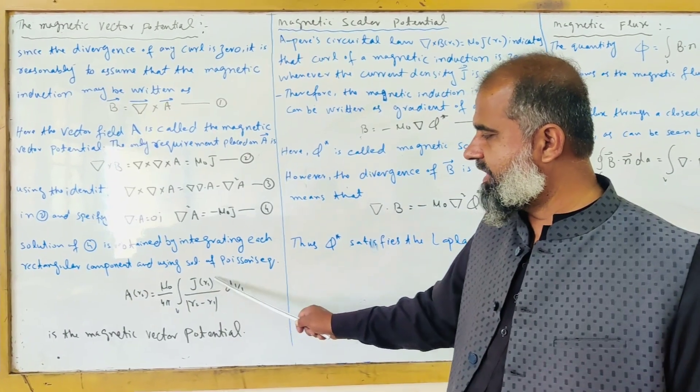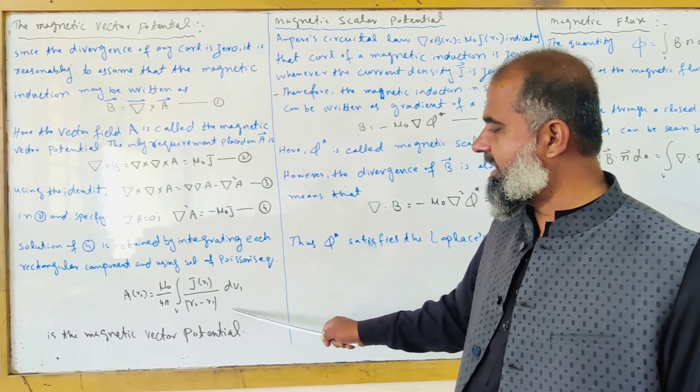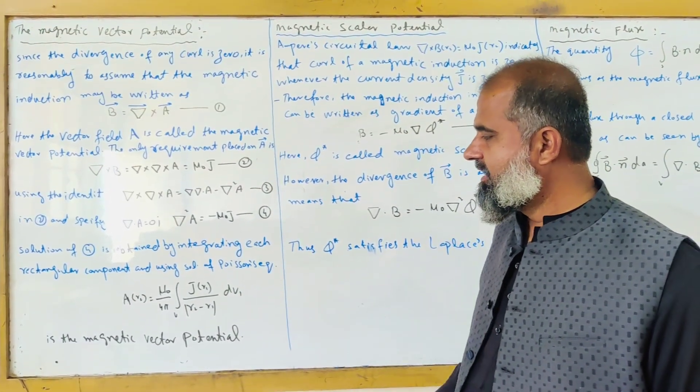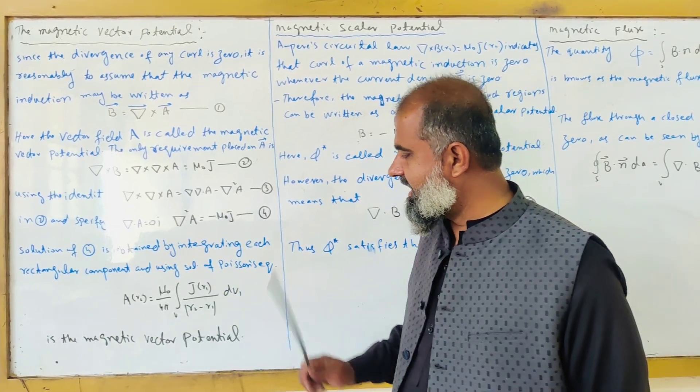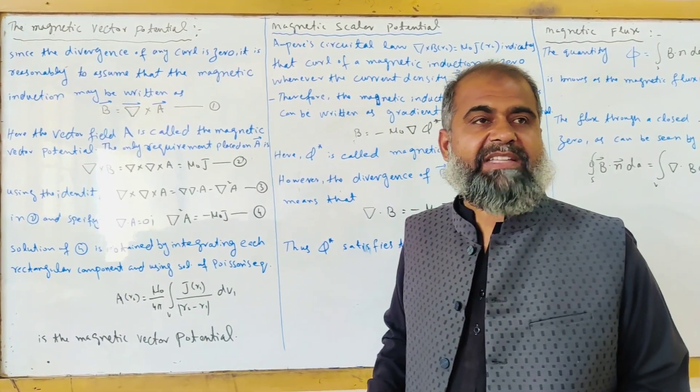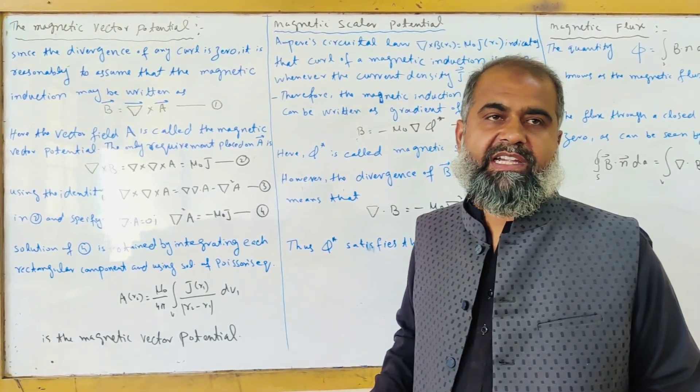A of R2 equals mu naught over 4 pi volume integral J of R1 over R2 minus R1 dV1. So this is the mathematical form of the magnetic vector potential.